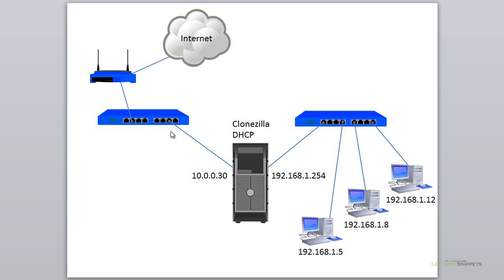This is the typical configuration for a small or home office setup. The address 10.0.0.30 is the address given to me by my router or the DHCP service running on my local area network.